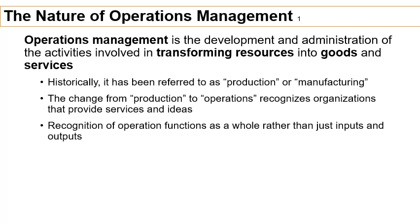The name 'operations management' has shifted from the traditional name these functions were given before, which used to be called 'production.' But the term production implies that a product is coming at the end of the line. Most modern, developed economies like the U.S., most European countries, and Japan have over 80% of their GDP coming from services. Because of that, talking about manufacturing or production doesn't include services. So we changed the term to 'operations,' which now includes both products and services.